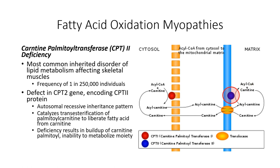The disease results from mutation to the CPT2 gene found midway along the short arm of chromosome 1. It follows an autosomal recessive inheritance pattern, requiring two dysfunctional alleles for the symptoms to present. Without the enzyme in place, there is a buildup of acylcarnitine in the cell, which can interfere with cellular function and contribute to muscle cell damage. Despite being the most common of the fatty acid oxidation myopathies, it is still exceptionally rare, affecting only one in 250,000 individuals.